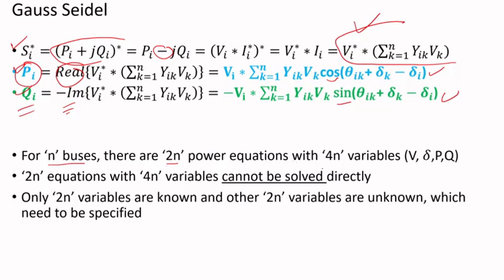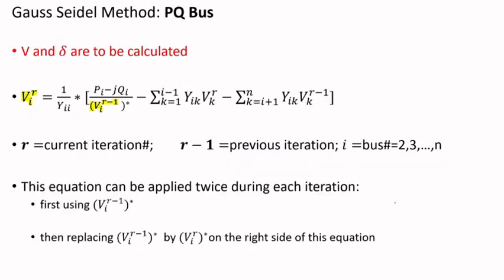If you have n buses there will be 2n power equations with 4n variables — voltage, angle, P, and Q. At each bus, only two of those four variables are known, so two n variables are known and two n are unknown. This system cannot be solved directly.